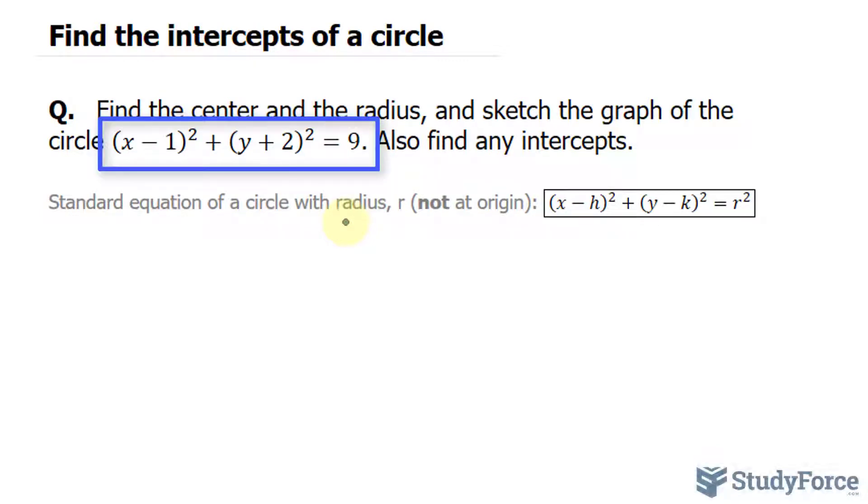As mentioned, when the equation of a circle is in this format, we call it standard form. And if you look at this general statement here, that number and that number signify h and k, which is the center of the circle.